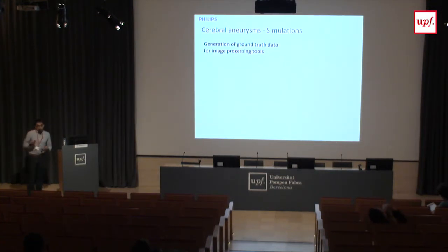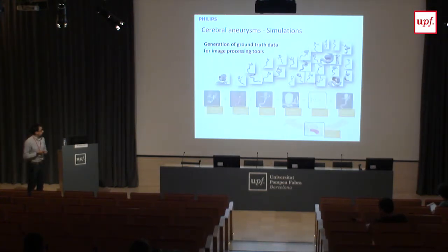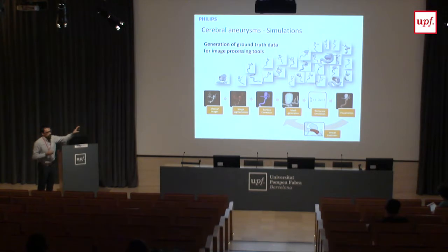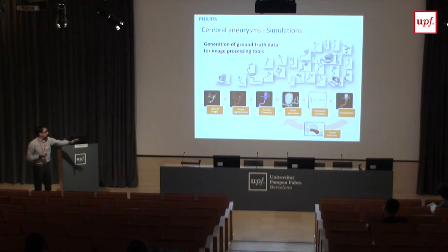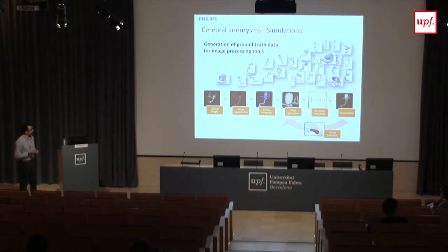To quantify the effect of a flow diverter before and after, we run many simulations across many patients. We follow this pipeline: from the image, we segment it, limit our region of interest, do mesh generation, solve the equations, visualize, and then we need to place a flow diverter. So we apply remeshing and run the simulation again.